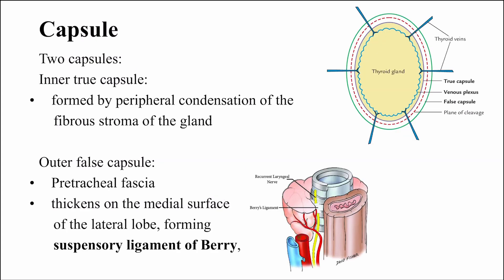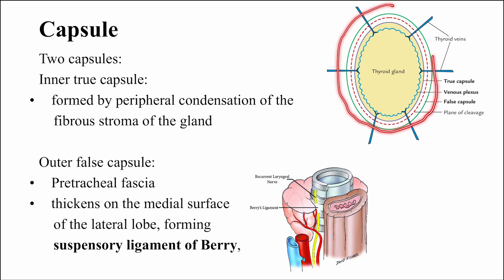Moving on to the covering of the gland — the capsule — there are two in number. The one inside is the true capsule and the one outside is the false capsule. The true capsule is formed by the condensation of the connective tissue, the fibrous stroma of the gland itself. The false capsule comes from the splitting of the pre-tracheal layer of the deep cervical fascia. The deep cervical fascia holds the thyroid gland strongly in position. Superiorly, it is attached to the hyoid bone and the thyroid cartilage. Inferiorly, it is attached to the apex of the pericardium.